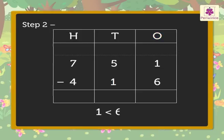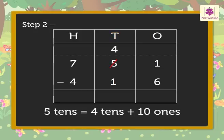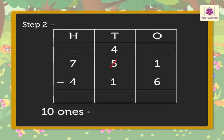As 1 is smaller than 6, we regroup 5 tens as 4 tens and 10 ones. Now, we have 10 plus 1 one, that is 11 ones. Therefore, 11 minus 6 is equal to 5 ones. Write 5 in the ones column.